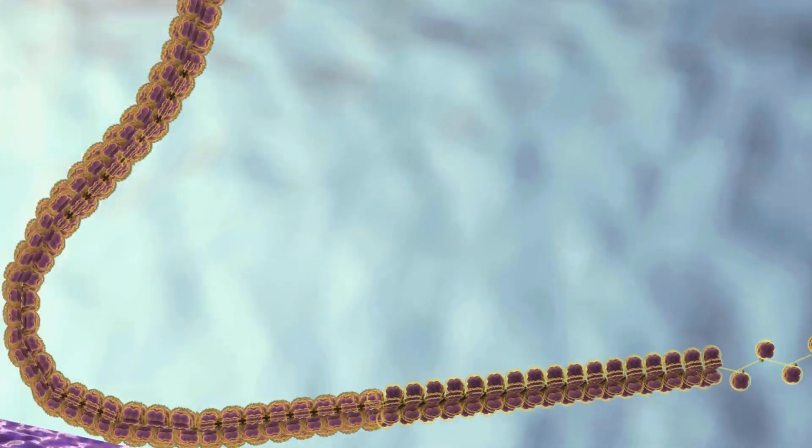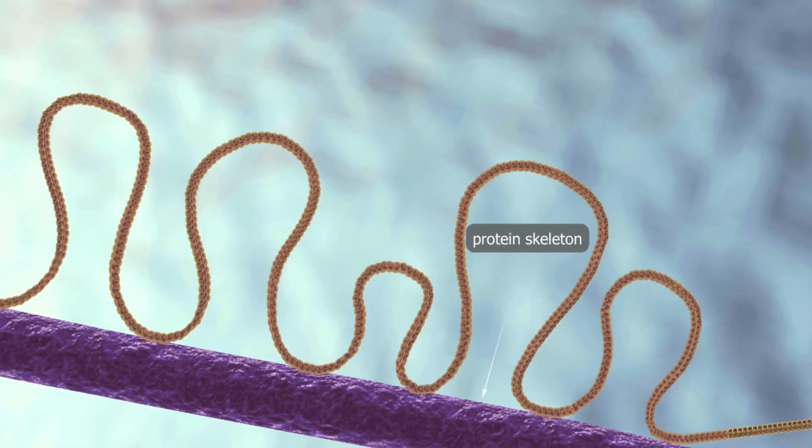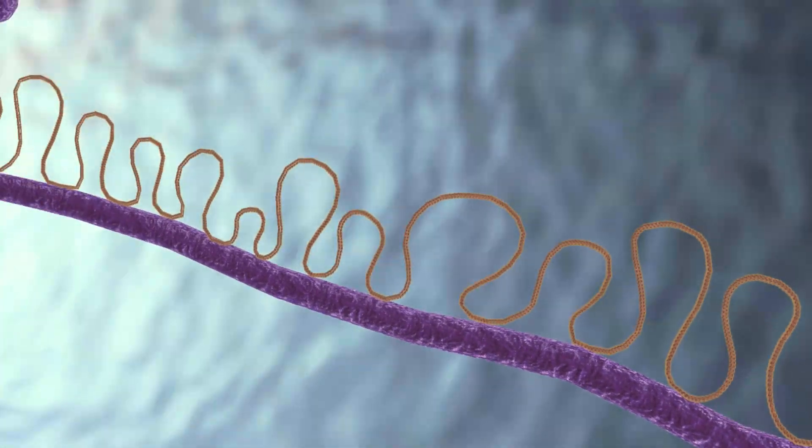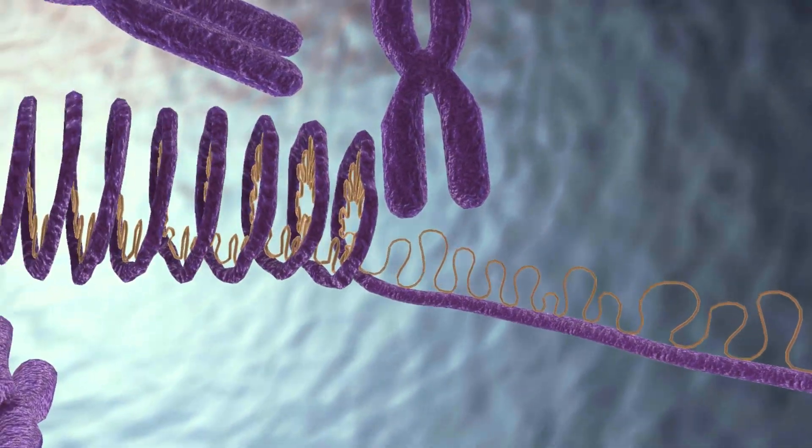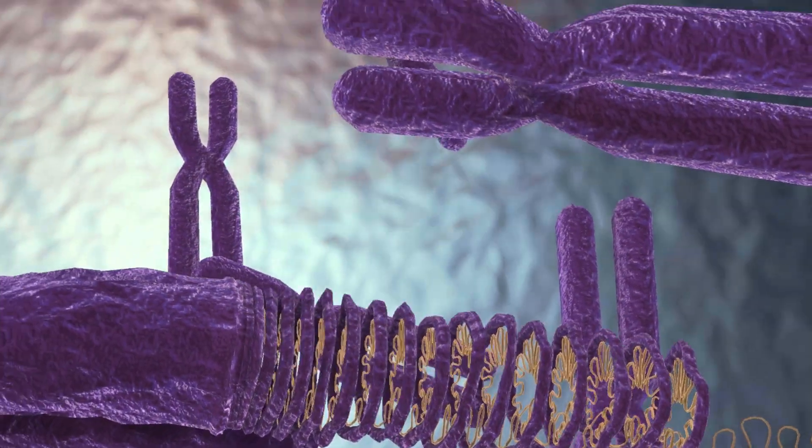In the next stage of packaging, parts of the coil attach to a protein skeleton and form a characteristic loop structure. The loop structure coils again to form the chromosome.